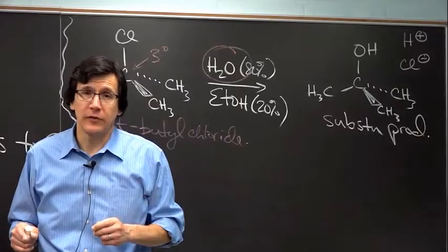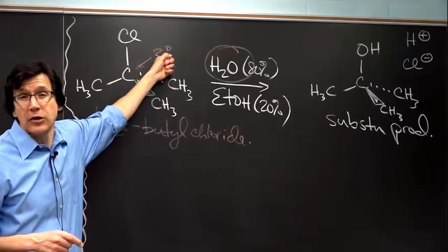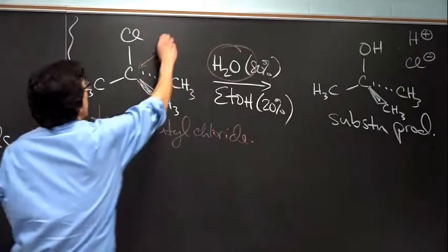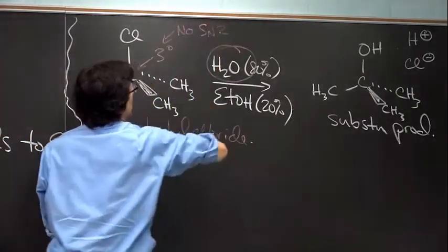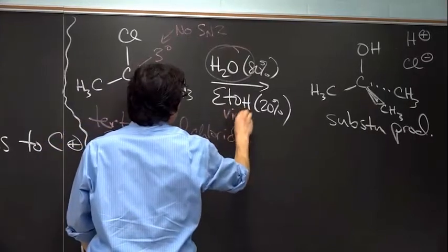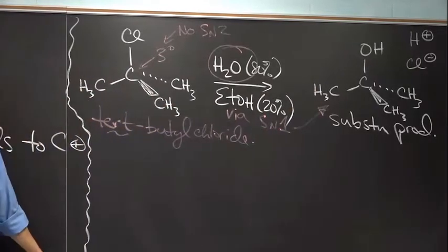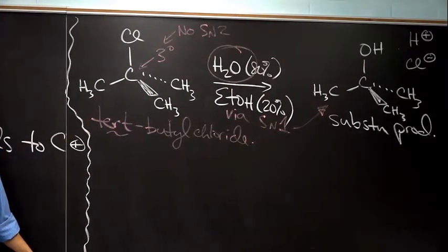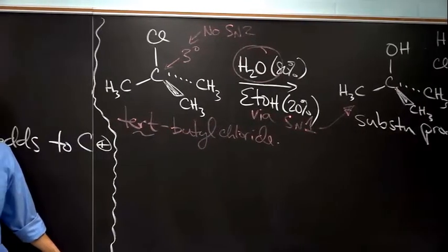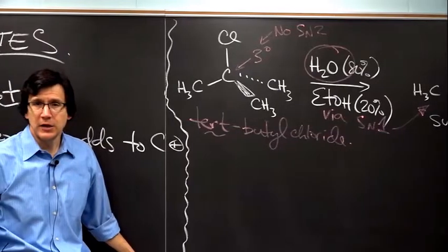And what would the mechanism be? Do you think it would be an SN2 mechanism? Tertiary alkyl chloride, no SN2. This must be via an SN1 type of mechanism that we get to the substitution product. So be sure you can, I won't write that out, but be sure you can do that. There's a key intermediate, of course, and we'll talk about that in just a minute.